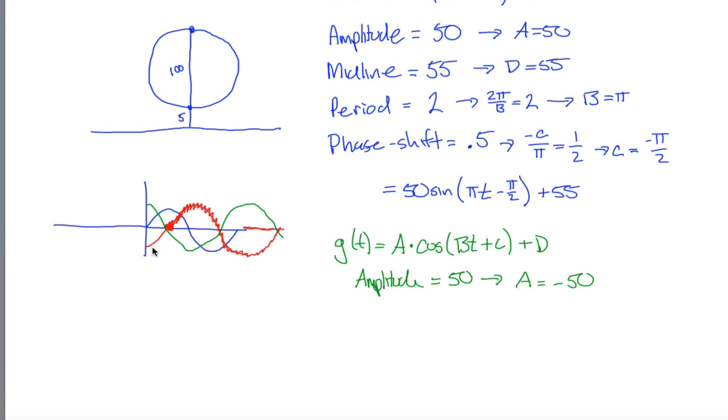But now that tells us that A is equal to negative 50 because I want to switch the orientation so that I start at the right spot. The nice thing is now I start at the right spot, period, so I won't have to have any phase shift. My phase shift can be 0. The midline is still equal to 55 and that still tells us that D is equal to 55. The period is still equal to 2 and that still tells us that B is equal to pi. But now the phase shift is equal to 0.